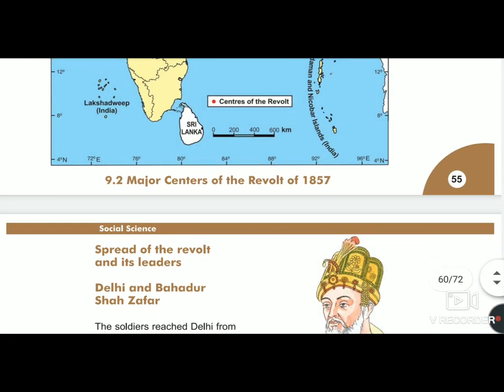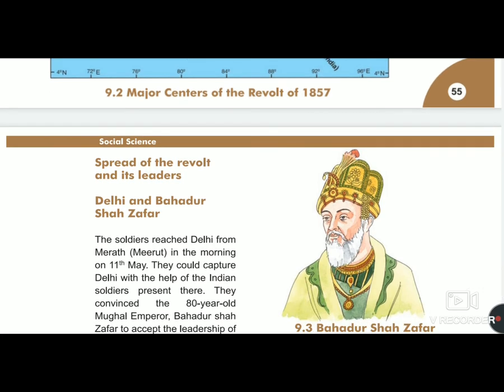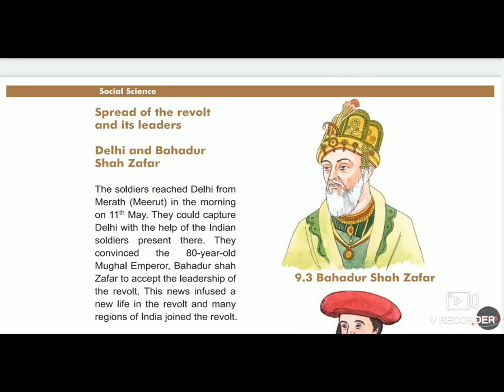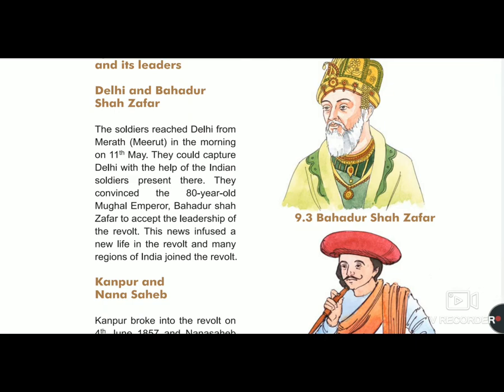We will now learn how the leaders spread the revolt and who the leaders were in different places. Different leaders worked in different regions. First, in Delhi, the leader was Bahadur Shah Zafar. The soldiers reached Delhi from Meerut on the morning of 11th May and captured Delhi with the help of Indian soldiers. They convinced the 80-year-old Mughal Emperor Bahadur Shah Zafar to accept the leadership of the revolt. This news infused new life into the revolt and many regions of India joined in.